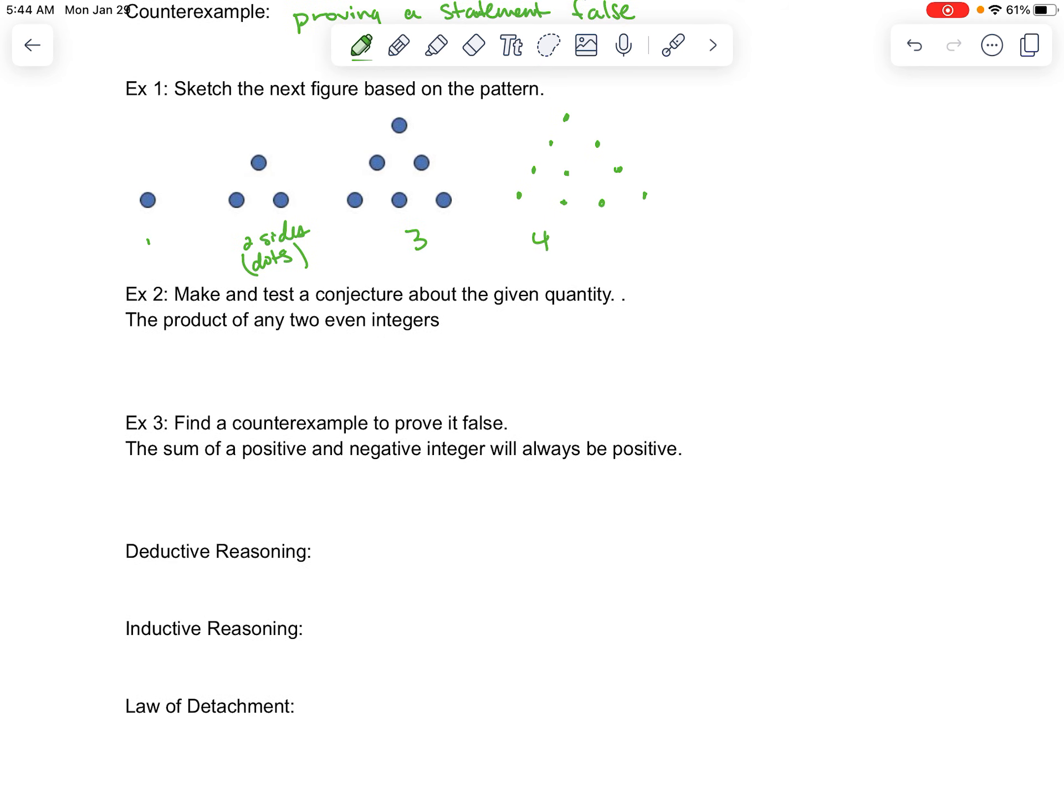Make and test a conjecture about the given quantity. Personally, I think this is easier if you test a conjecture, or test some different options, and then make the conjecture. I just think it's easier to go that route. Just because if you make the conjecture right away, you might not be realizing something.